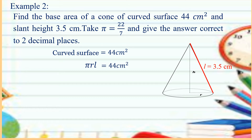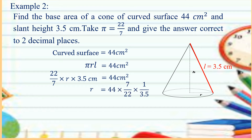Substituting values for pi and slant height, we get 22 over 7 times R times 3.5 cm is equal to 44 square cm. Dividing both sides by 22 over 7 and 3.5, we get R is equal to 44 times 7 over 22 times 1 over 3.5. Simplifying, the radius is equal to 4 cm.